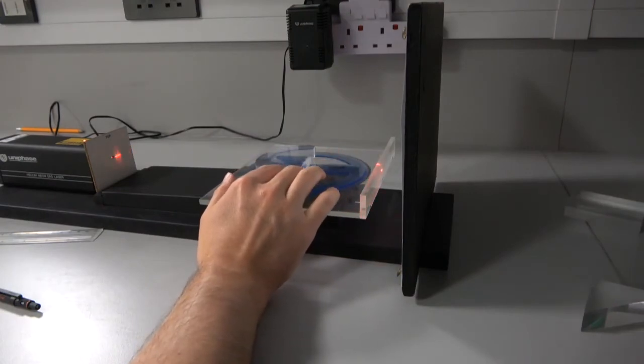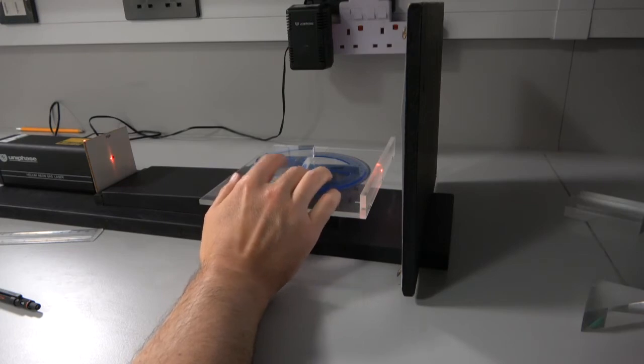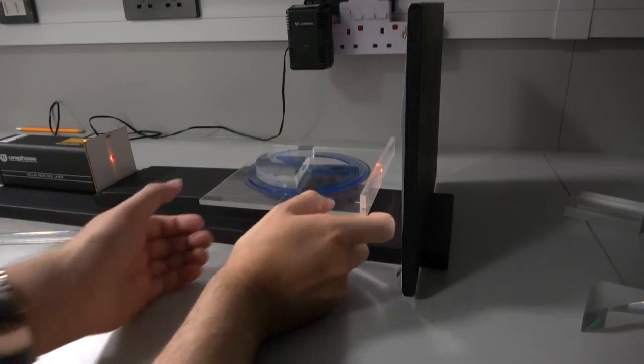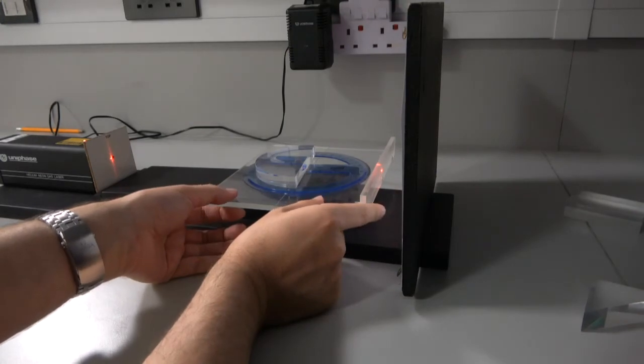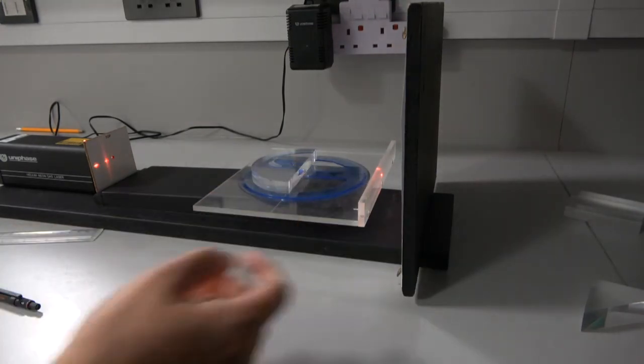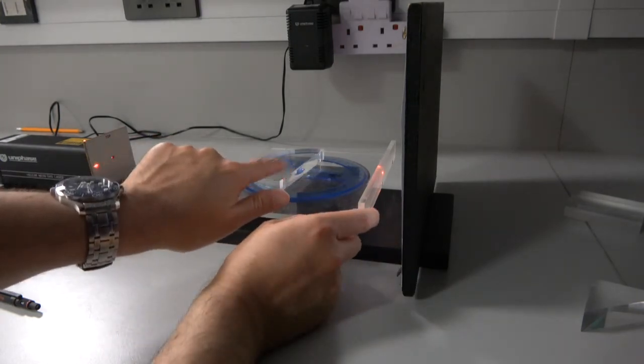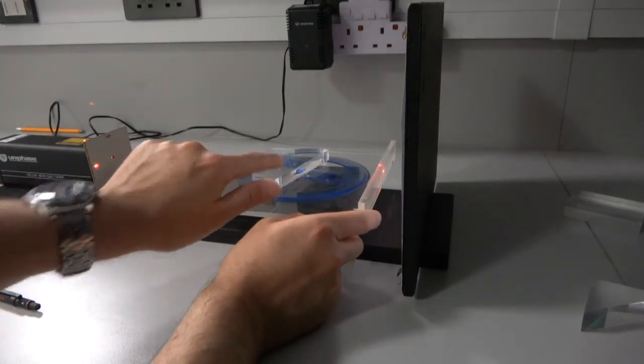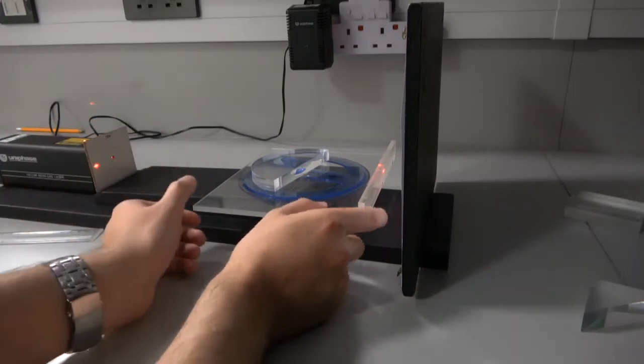You can see as I turn this, we're getting the reflected face passing over the hole. So now you can see there are two reflections there, and one of them is caused by the prism and the other is just coming off the reflecting face there.